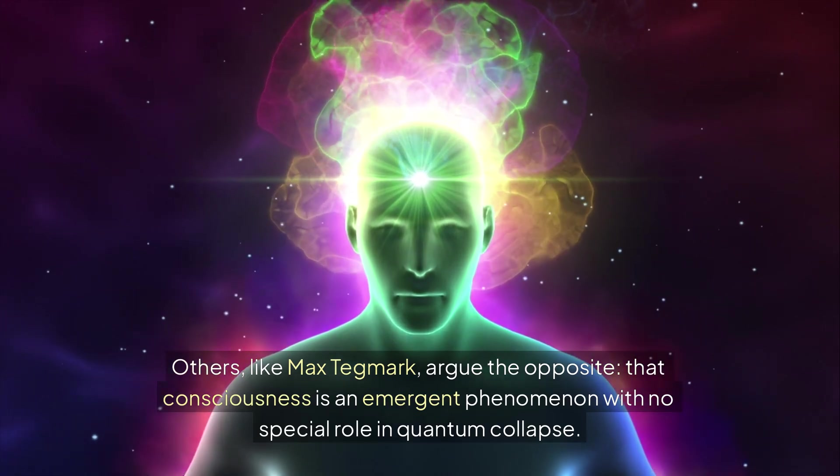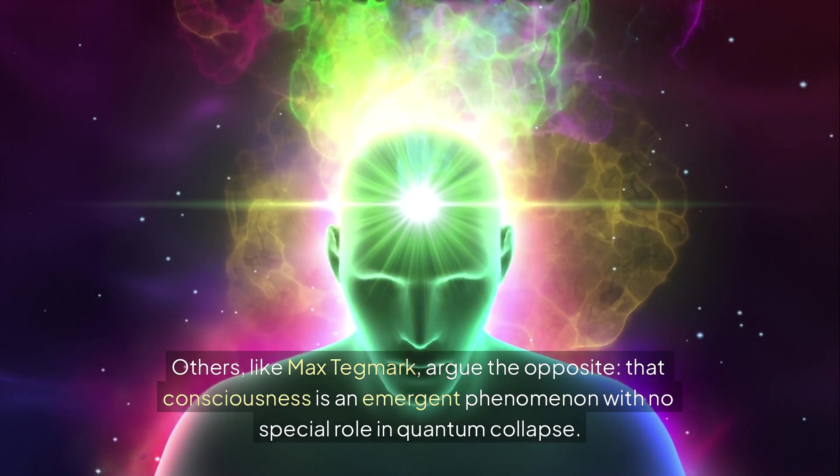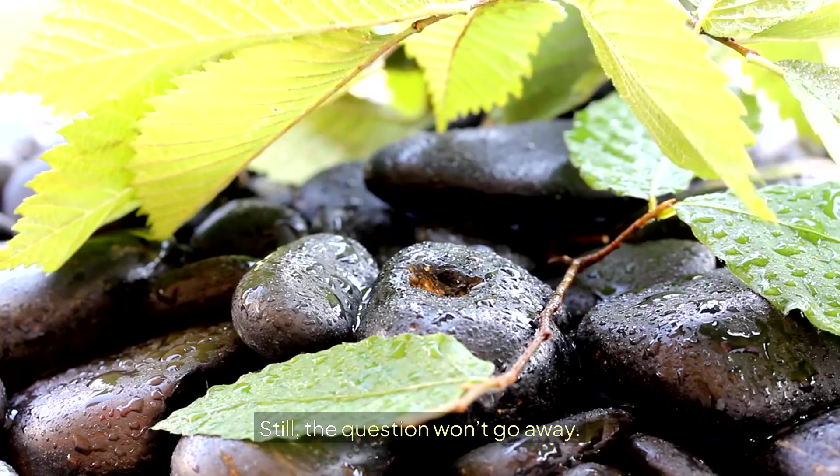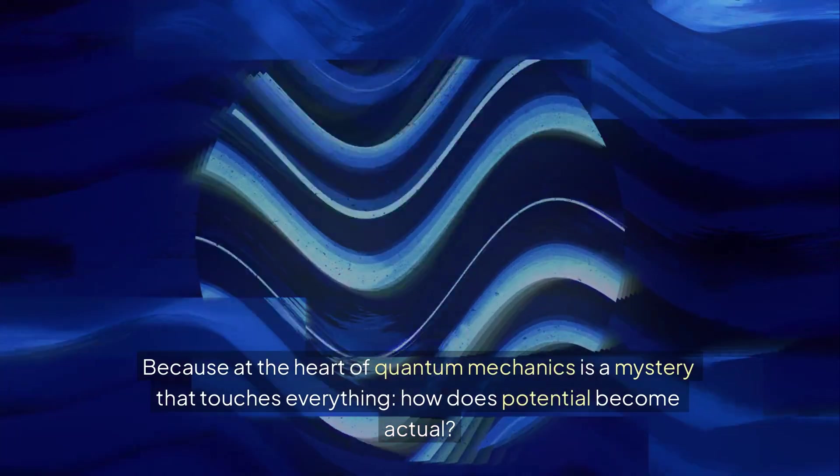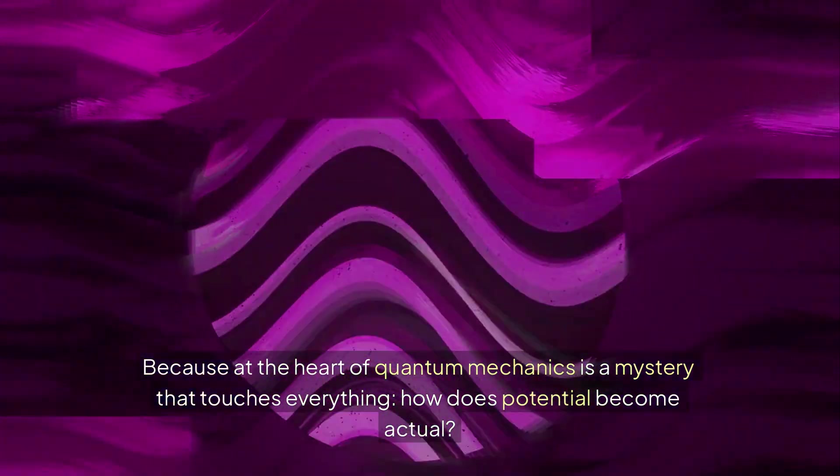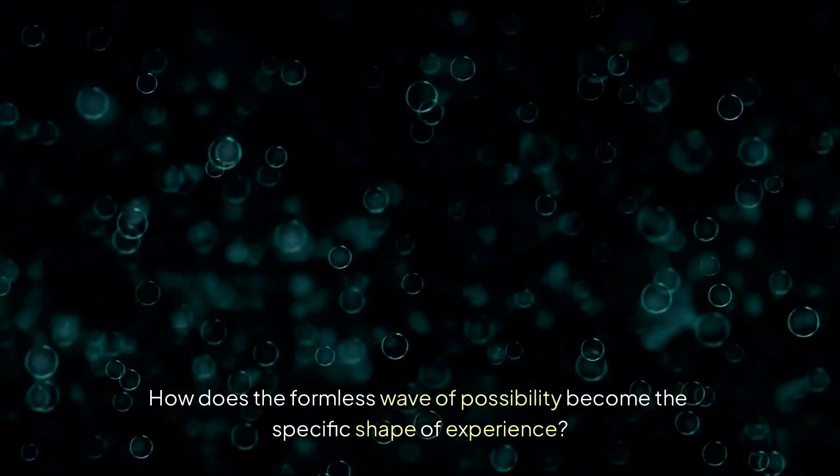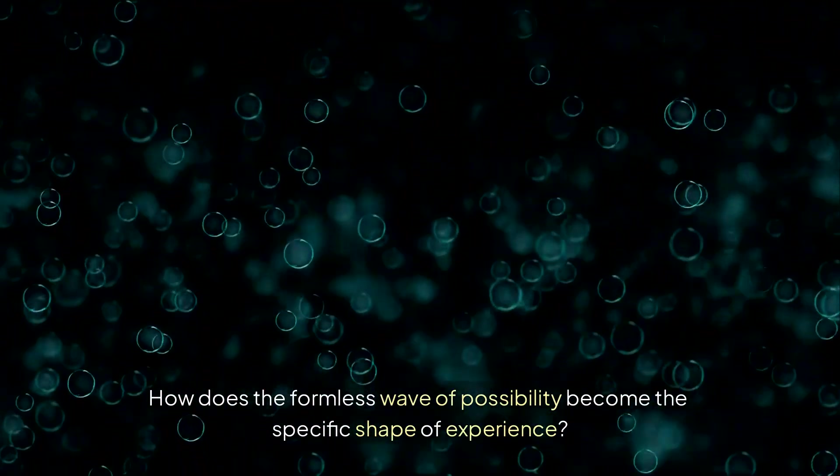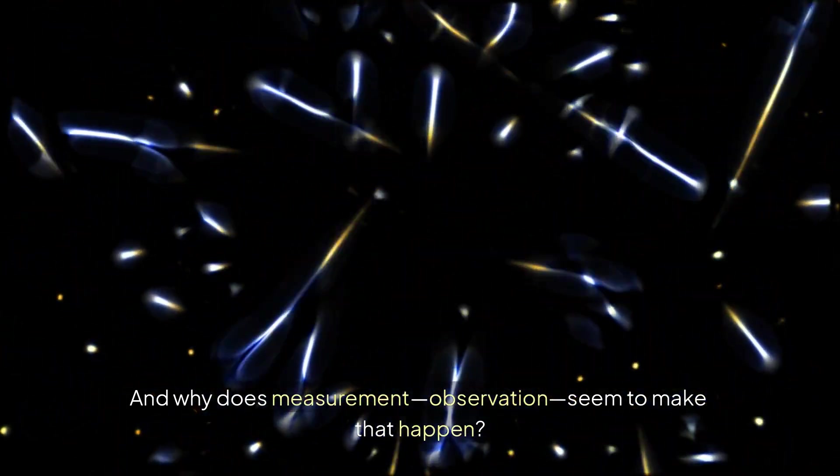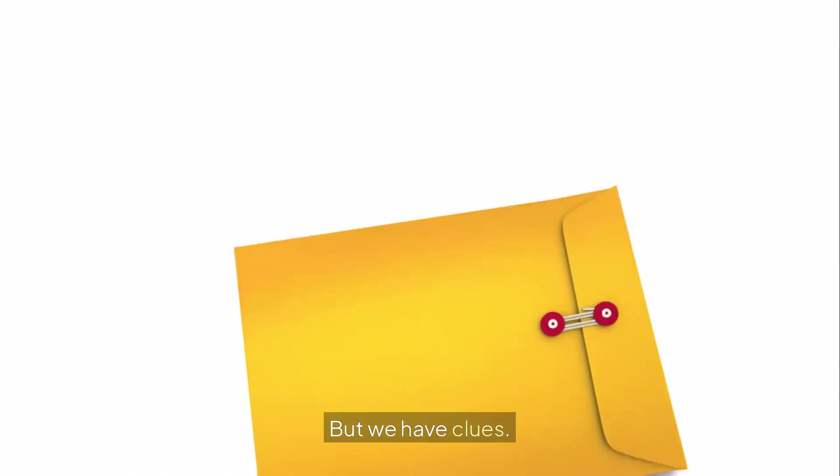Others, like Max Tegmark, argue the opposite. That consciousness is an emergent phenomenon with no special role in quantum collapse. Still, the question won't go away. Because at the heart of quantum mechanics is a mystery that touches everything. How does potential become actual? How does the formless wave of possibility become the specific shape of experience? And why does measurement, observation, seem to make that happen? We don't have answers, but we have clues.